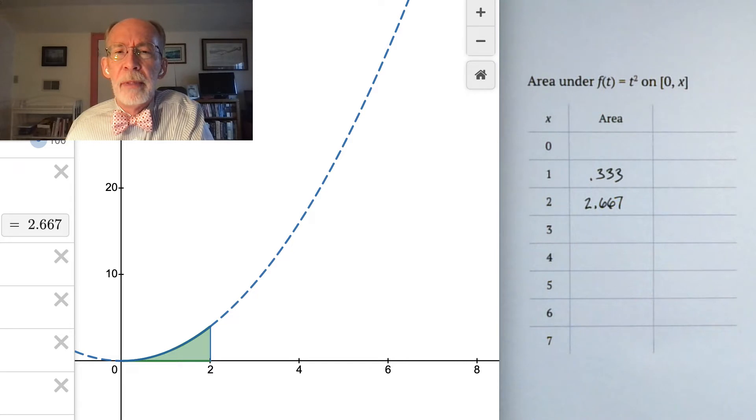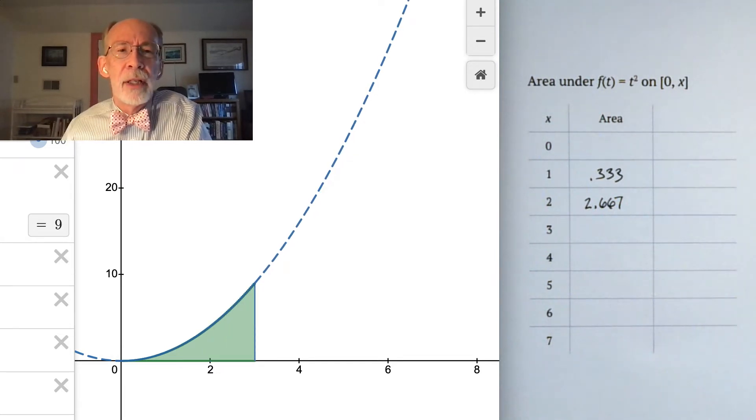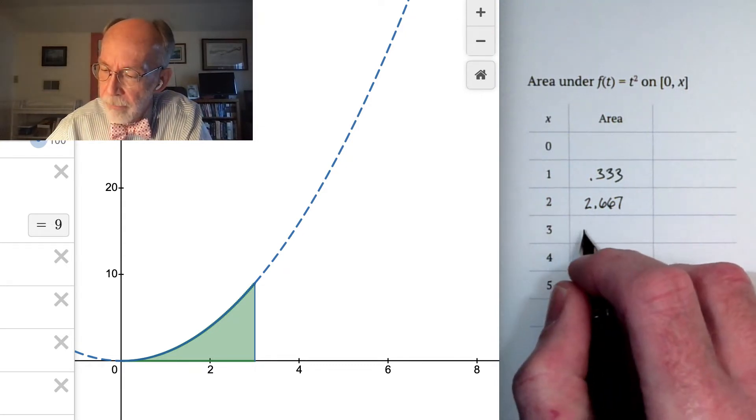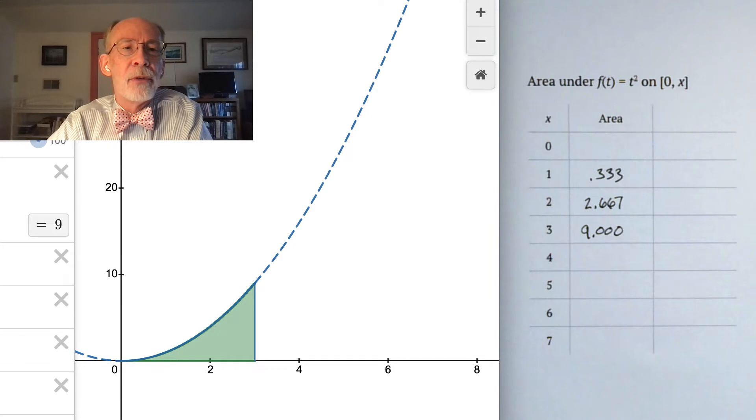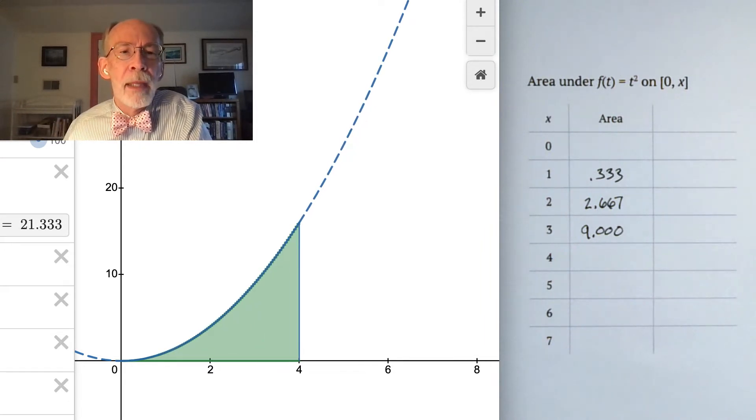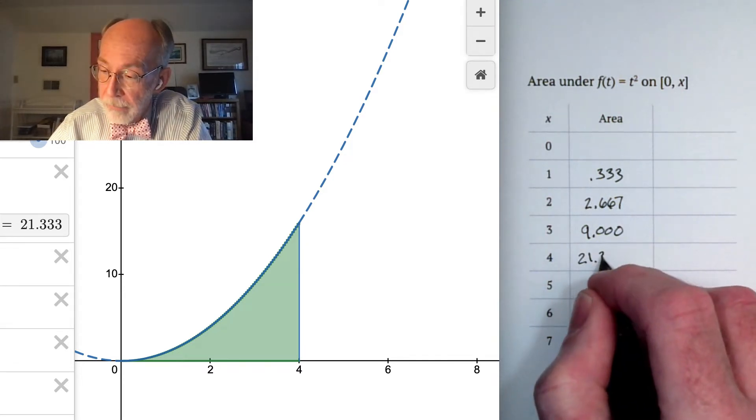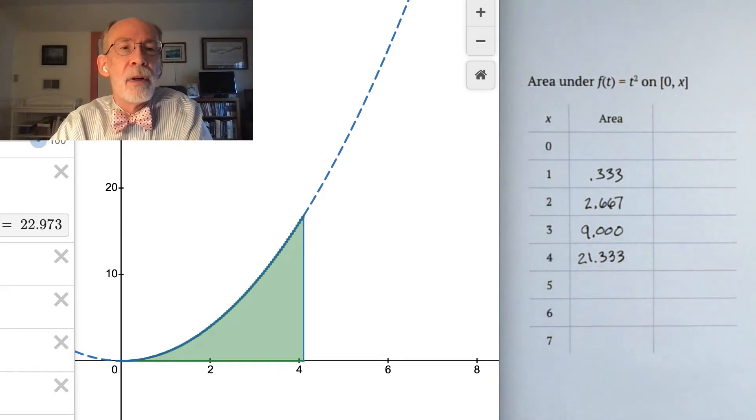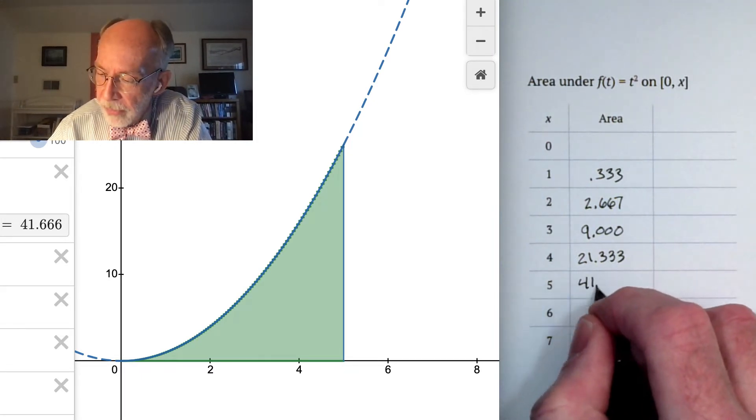And I'm beginning to have a sense maybe that thirds are going to be playing a role in this conversation. If we dial it up to x equals 3, we find that this area is approximately 9. And since we're set for three decimal places, we can be confident that those are zeros. If we go to x equals 4, we see about 21 and looks like a third.